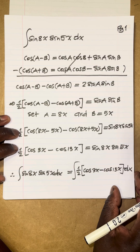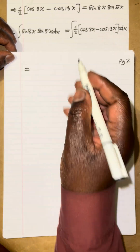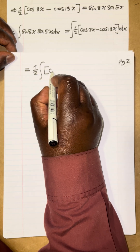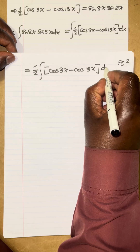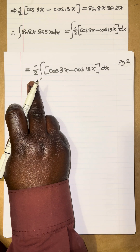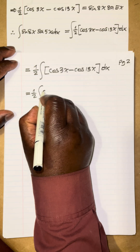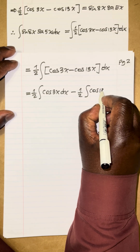Moving to the next page, this integral equals one-half times the integral of cosine 3x minus cosine 13x dx. Taking the constant one-half out, and distributing it with the integral and dx, this becomes one-half times the integral of cosine 3x dx, minus one-half times the integral of cosine 13x dx.